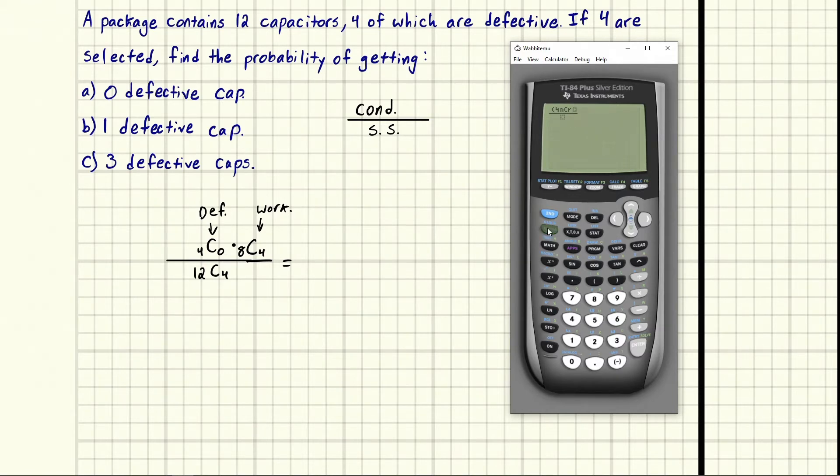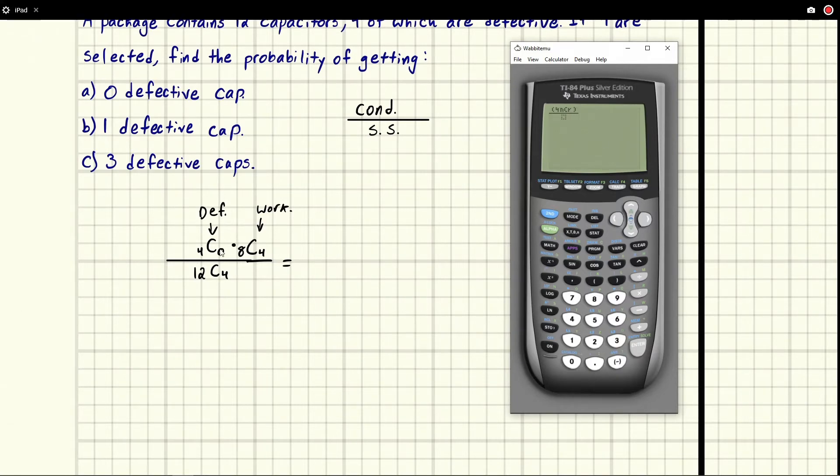So we got a four and then we have a combination. So we're going to go to math probability. Combination is number three. So you see combination. Hold the phone, I don't recall seeing an R there before. Well, that's fine. I guess I just never noticed.